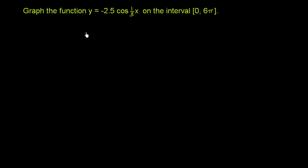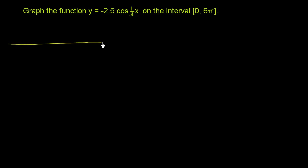We are asked to graph the function y is equal to negative 2.5 cosine of 1 third x on the interval 0 to 6 pi, including the end points. I'm going to start by graphing the simplest version of this - the root function, which is just cosine of x.